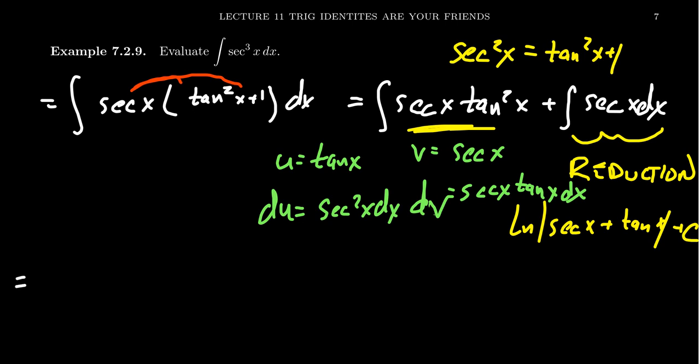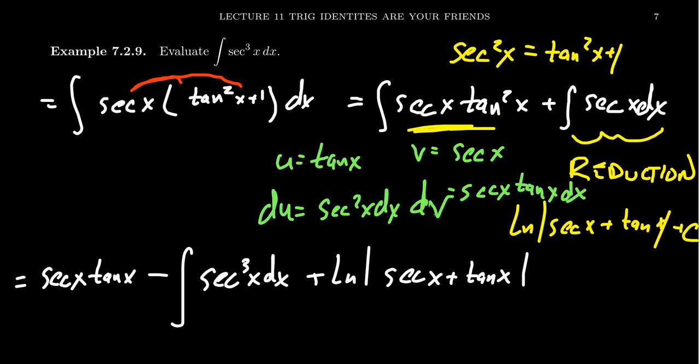Using integration by parts here, you're going to get u times v, which is secant x tangent x. Then you're going to get minus the integral of secant cubed x dx, and then we have this natural log of secant x plus tangent x. Hey, this integral of secant cubed, I feel like this is deja vu. It's right here. The integral of secant cubed is what we're trying to compute.